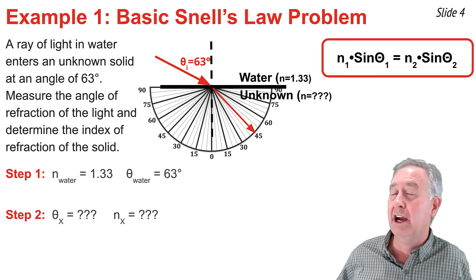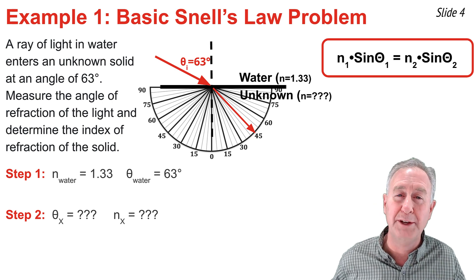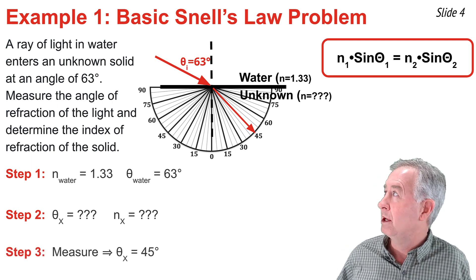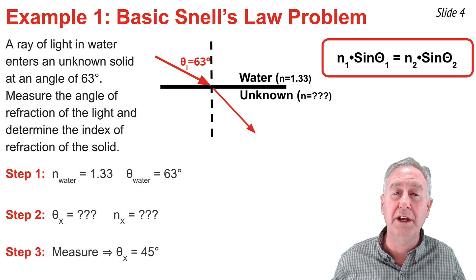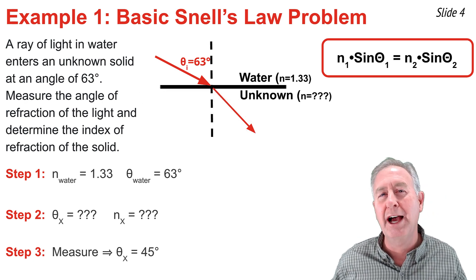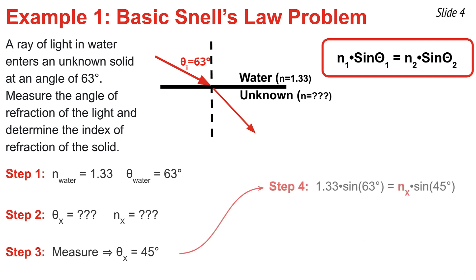I'm going to lay a protractor down upon the diagram and measure the angle between the refracted ray and the normal line. That angle comes out to be 45 degrees. So I now know three of the four quantities in the Snell's Law equation, and I'm going to substitute them in to solve for n_x, the index of refraction of this unknown material.